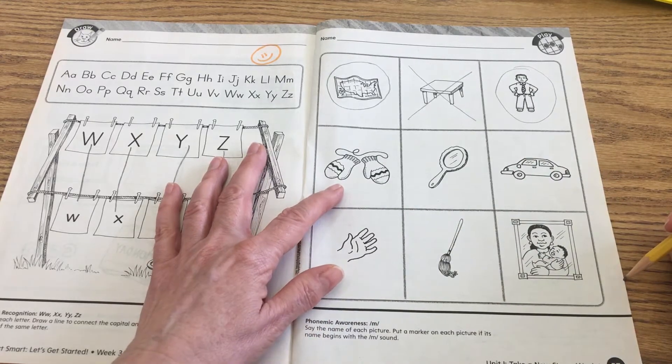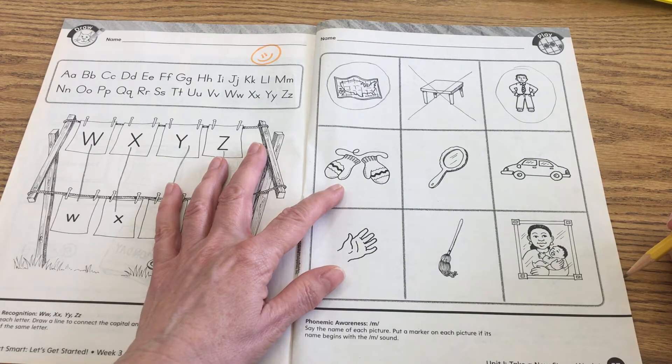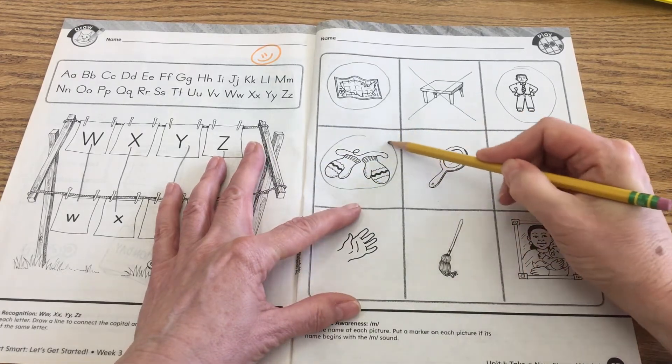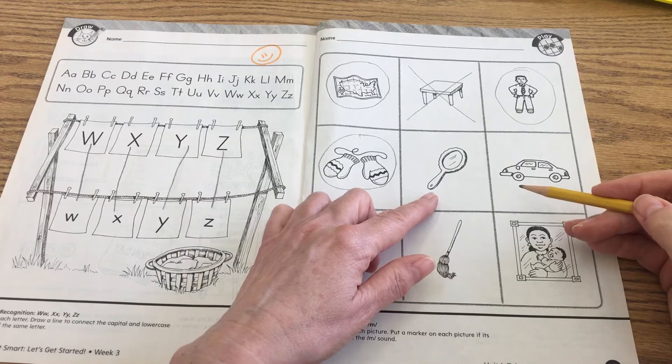Okay, echo mittens. Mittens. Say monkey, monkey mittens. So those can go with the M sound.